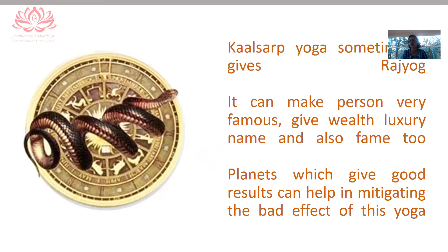Kalsarp Yoga does give us Raja Yoga, but for that you have to withstand the Halahal. There is a good coming out of so much poison that enters our lives — we just need to learn to contain that poison. It can make a person very famous, give wealth, luxury, and fame. Planets which give good results help in mitigating this yoga. If there is an exalted Saturn or an exalted Jupiter, these strongly placed planets have the ability to reduce Kalsarp Yoga to a great extent — though you must also consider which house lords they are and what the Lagna is.